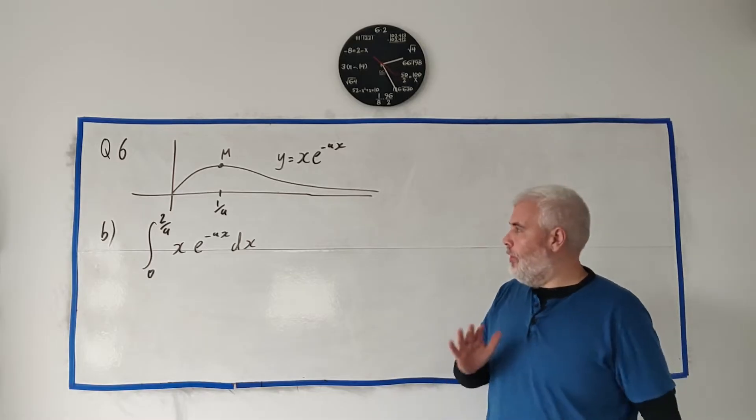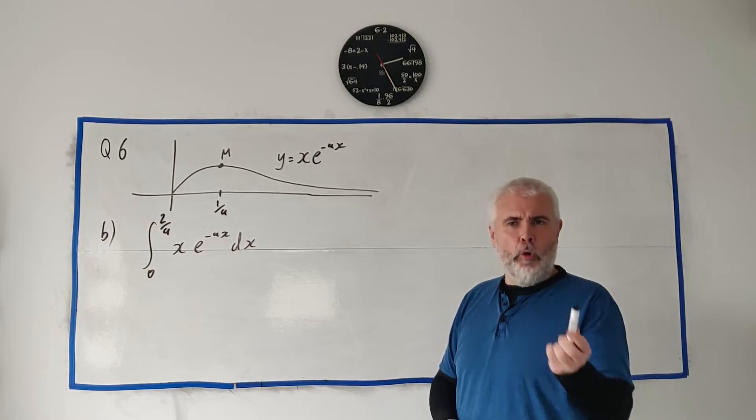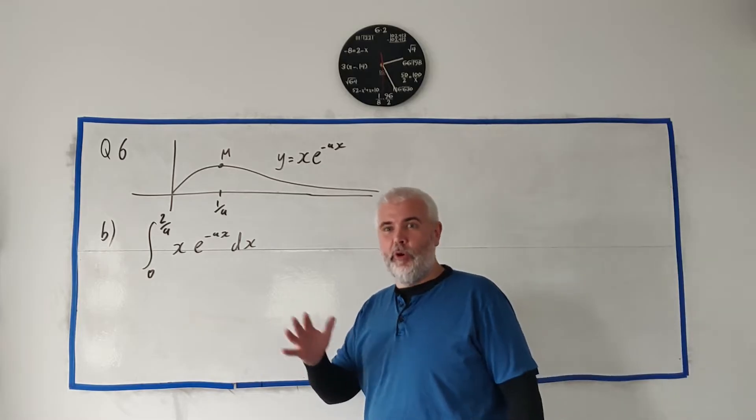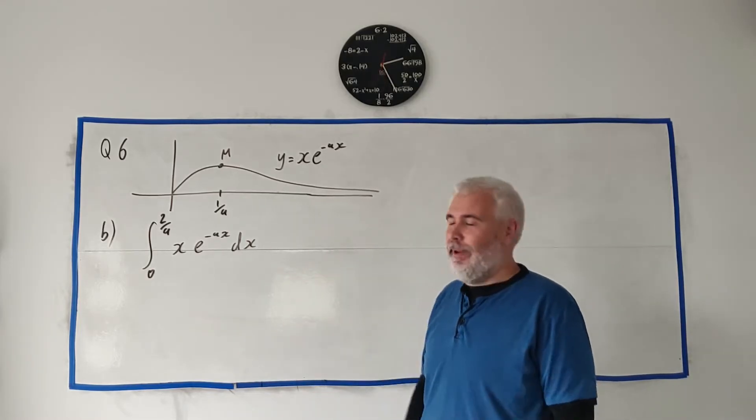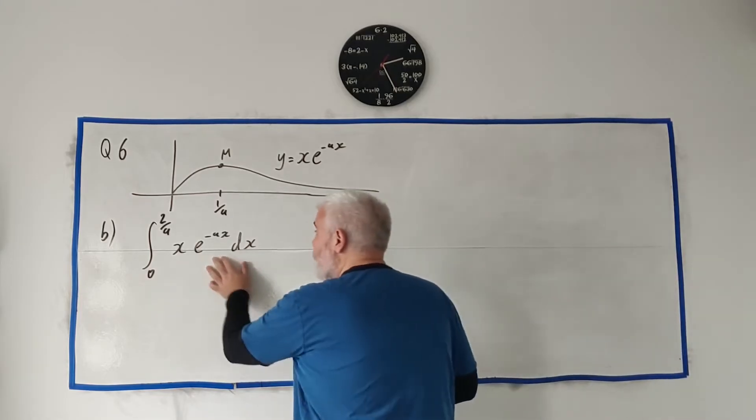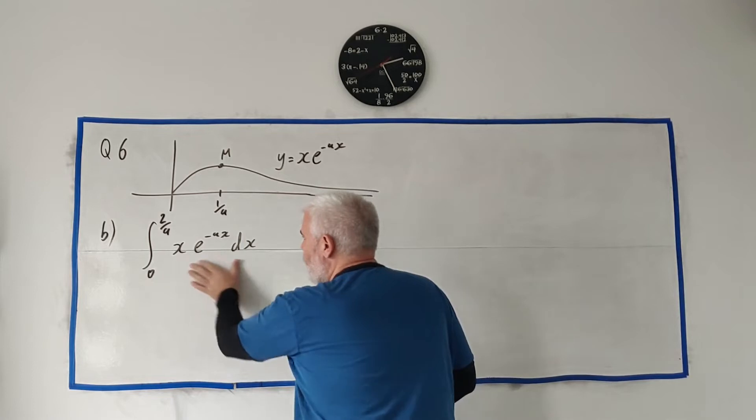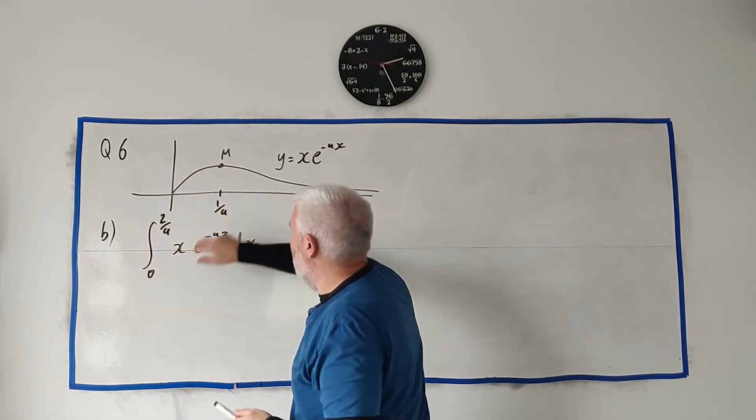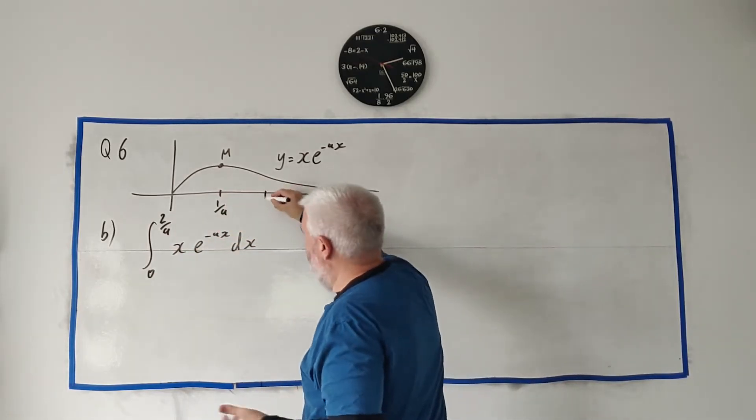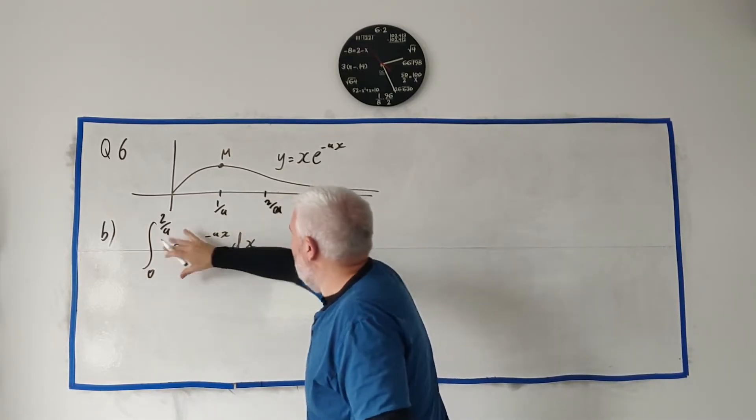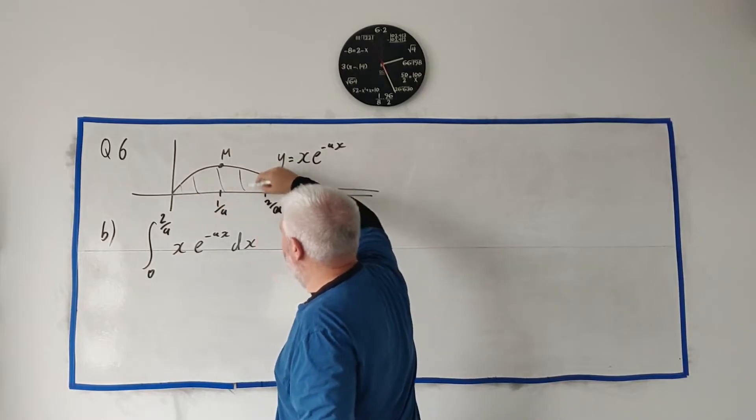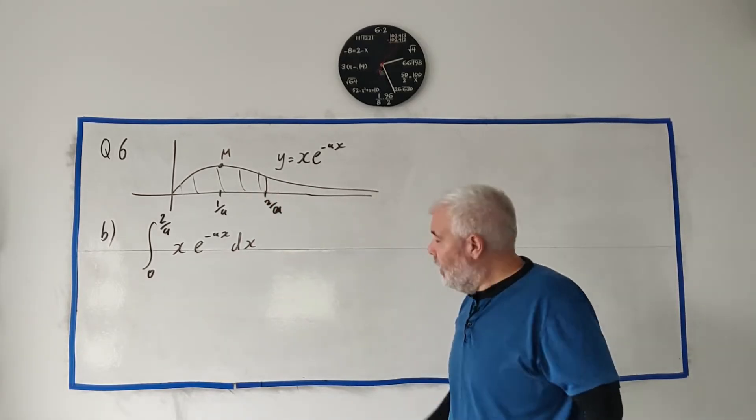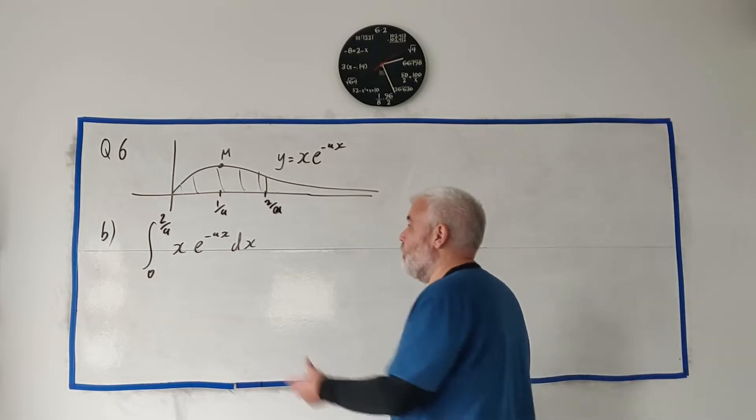Hopefully you kept up with part A, because it gets harder for part B. There's four marks for the first part, five for part B. I think it should be worth more than one extra mark because it's quite difficult, very messy, a lot of places where you can get lost. They're asking us to integrate this formula between zero and 2/a. 1/a is what we found in the first part. 2/a would be here. They're asking to find the area between here.